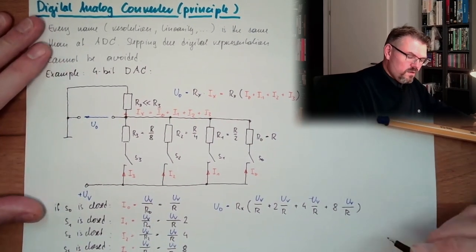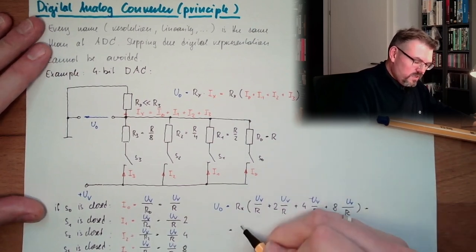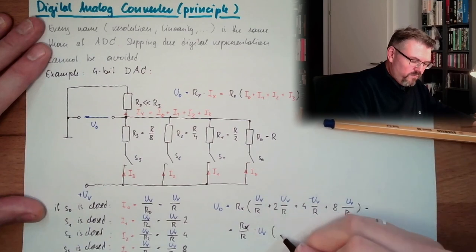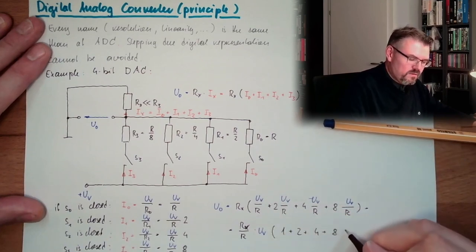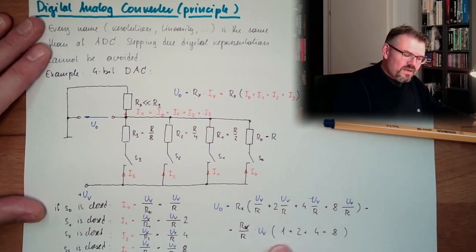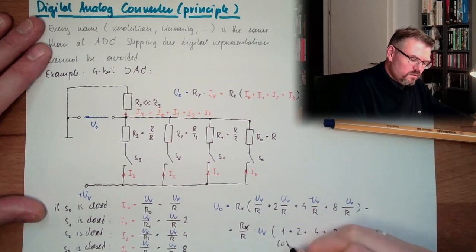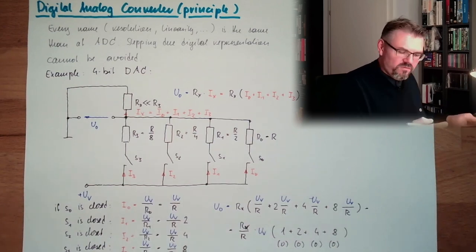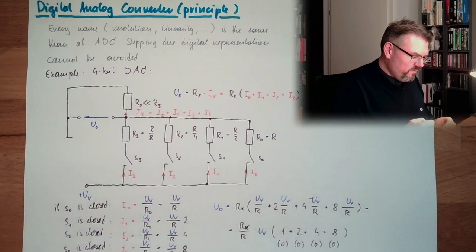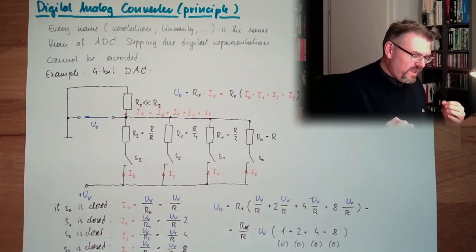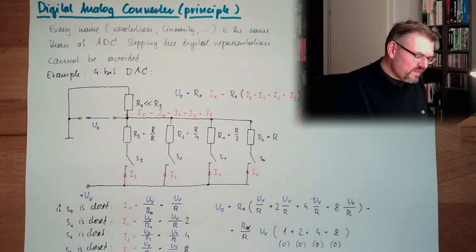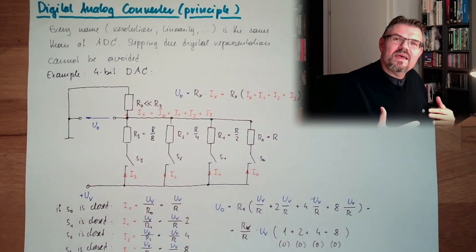So actually, what we have is that our output voltage is Rx divided by R multiplied by UV. And then we have one plus two plus four plus eight. And this is either zero or those values. And because I've selected the resistors in a way that it reflects the value of the digit, I can reach the output voltage reflecting the value of these digits. Isn't that cool?